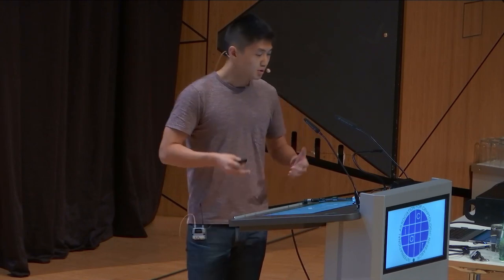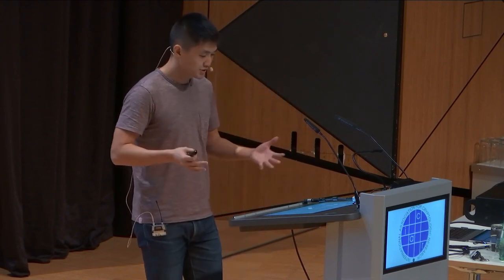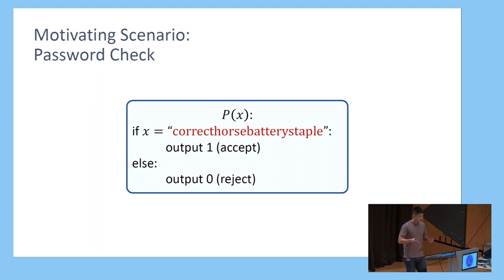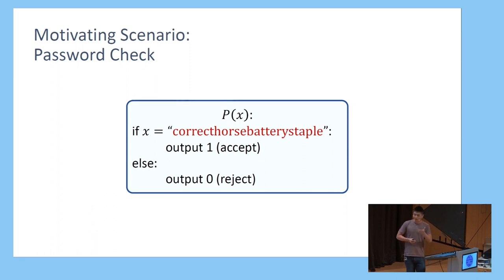Our motivating scenario is this simple password check application. You're trying to write some program that's going to accept if your input is equal to some preset password. From a functionality standpoint, the pseudocode on this slide is totally fine. But it's pretty obvious that you would never want to do a password check this way, because if an adversary sees the implementation of your program, they'll learn your password in the clear, and you have no security whatsoever.